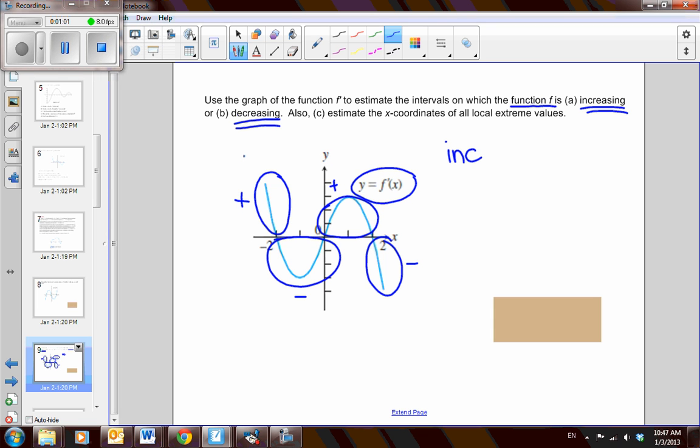So we can say that f of x is increasing on the interval from negative infinity to negative 2, and then on the interval from 0 to 2, because that is when the first derivative is positive, or when the slope is positive. And then f of x is decreasing on the interval from negative 2 to 0, and then from 2 to infinity.